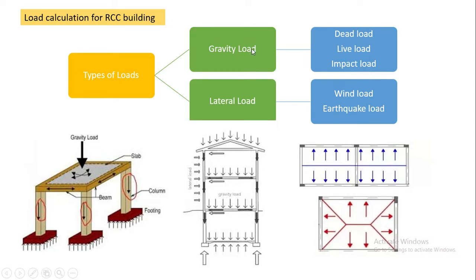Under gravity loads, we have: dead load, live load, and impact load. Dead load is an immovable load — loads that do not move are dead loads. Live load is a moving load; for example, furniture is considered a live load. Impact load is a cyclic load and acts over a short time period.